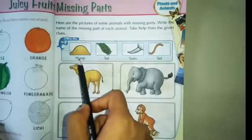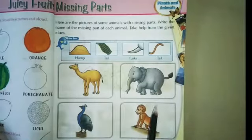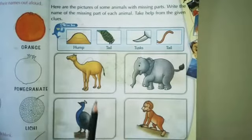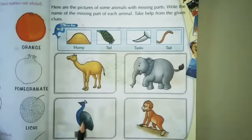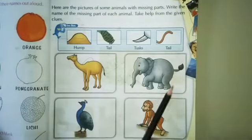First of all we will read these clues. These are the clues and these are the pictures. Some parts are missing from this picture. This is the picture of a monkey, peacock, camel, elephant and they have missing parts.